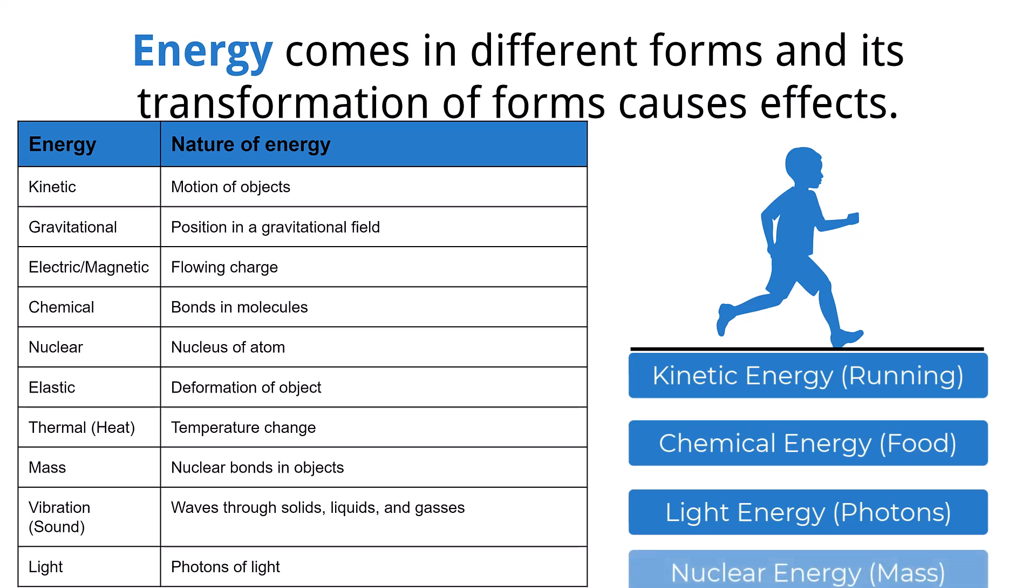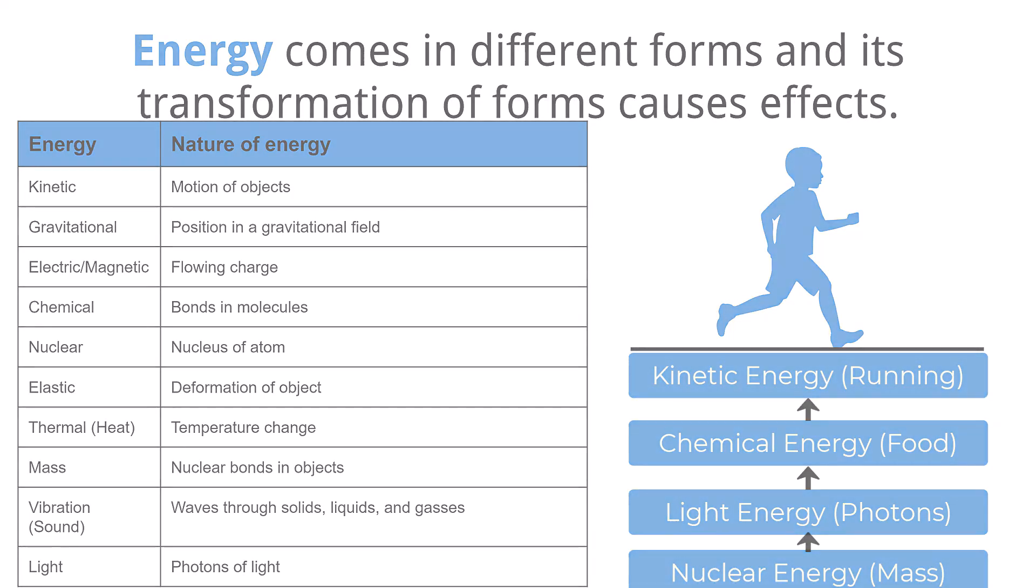Where then does the light energy from the sun come from? This is from the high-speed collisions that happen in our sun that convert the mass of atoms into photons of light. In this simple action of running, the transformation of the energy necessary to carry out this process has been transformed into a multitude of forms.